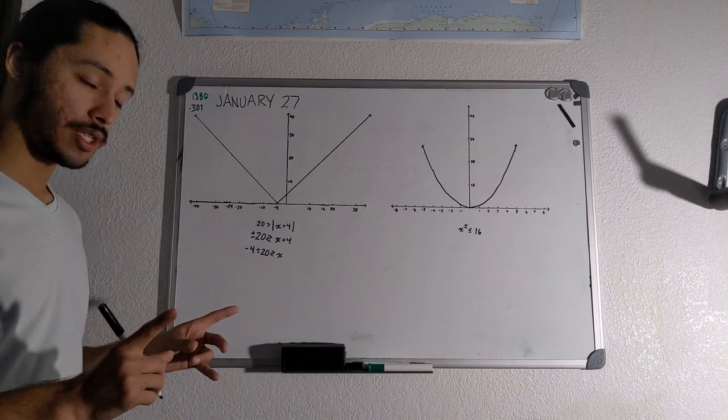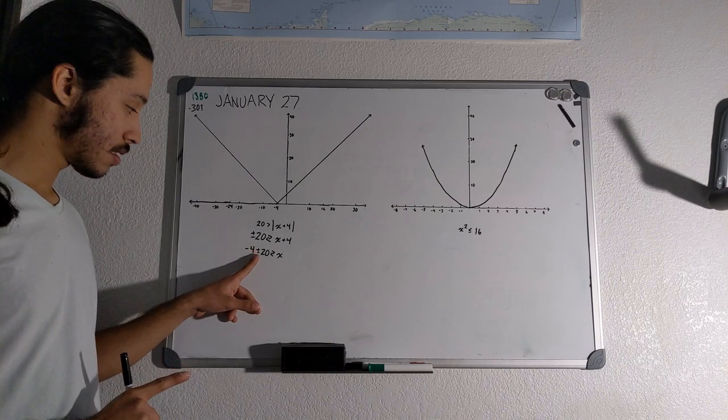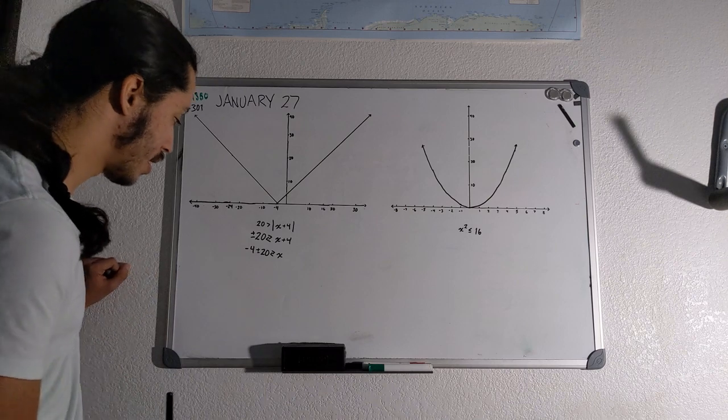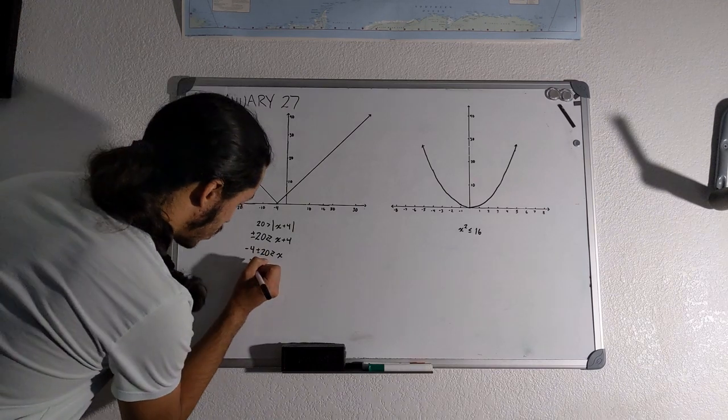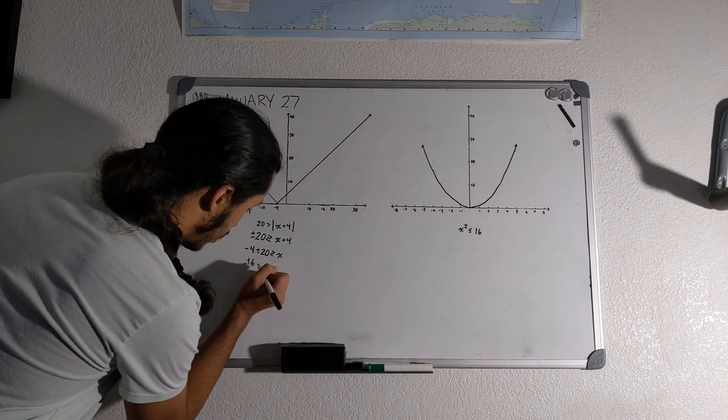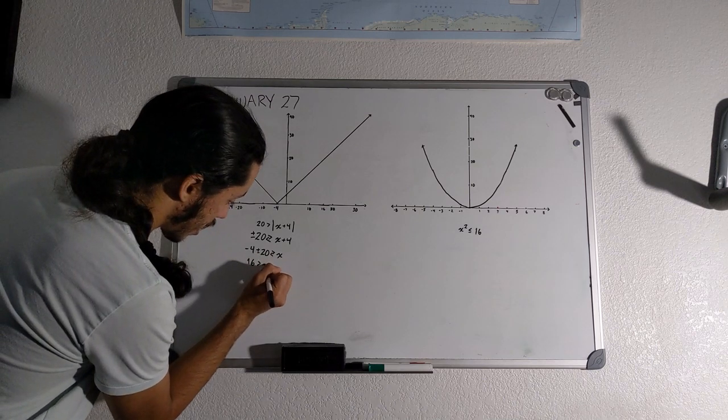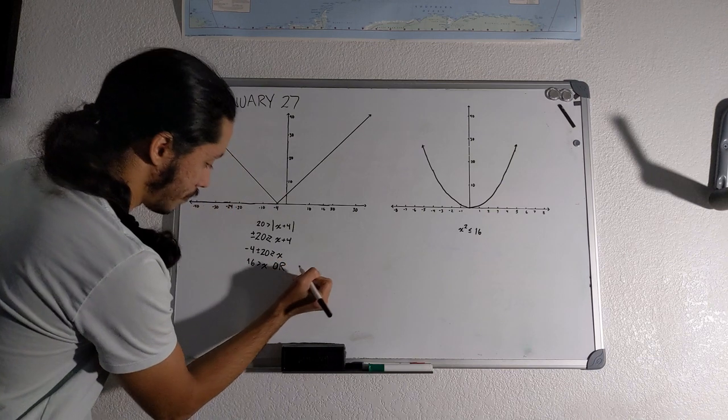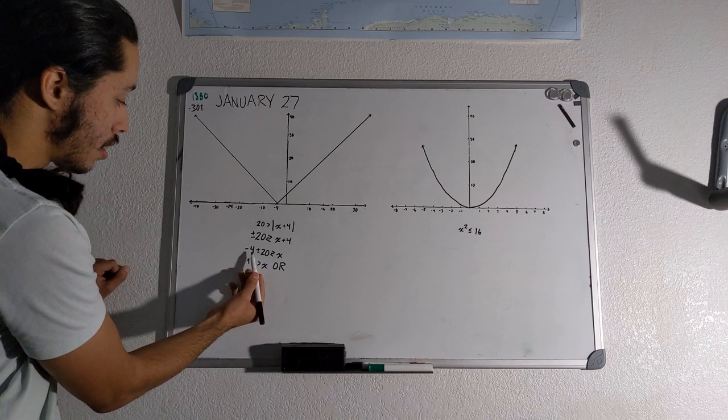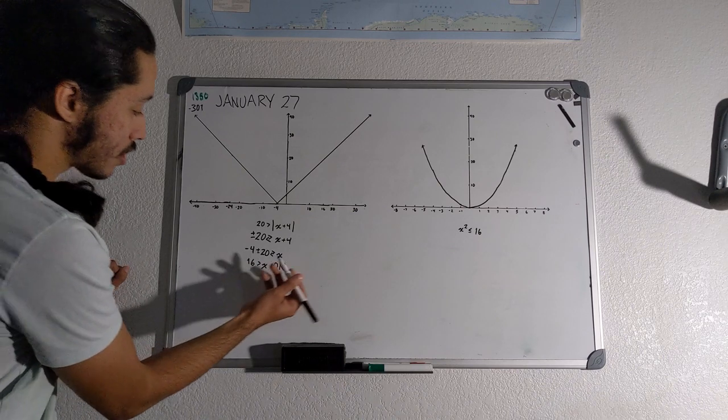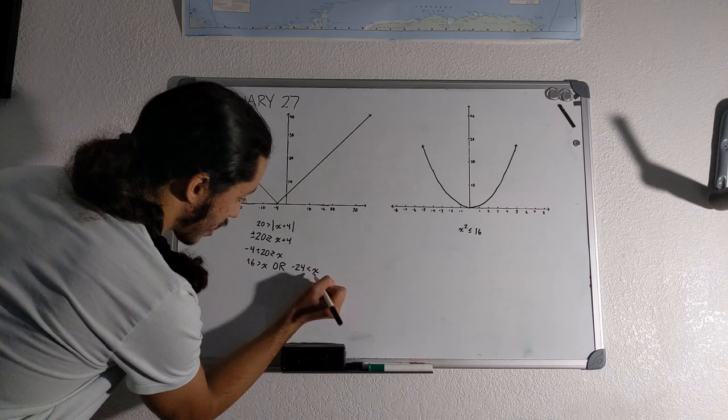And now here's what happens. We compute the two ranges for which this is true. When we use the plus sign in the plus or minus operator, we use the top inequality operator. So in this case, you get 16, right? Negative 4 plus 20 being 16 is greater than x. Or when you use the minus sign, use the bottom operator. So in this case, negative 4 minus 20 will get you negative 24 less than x, right?